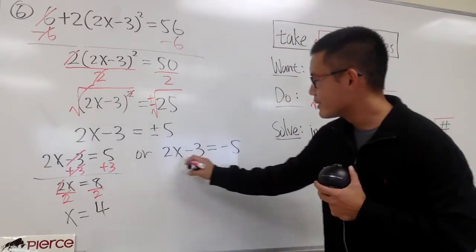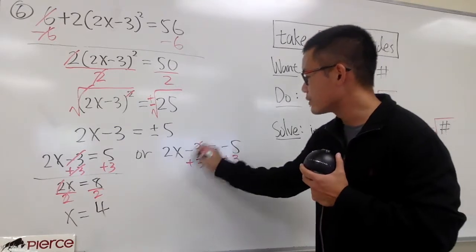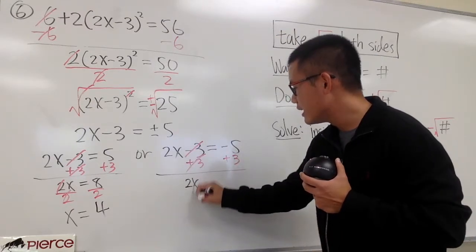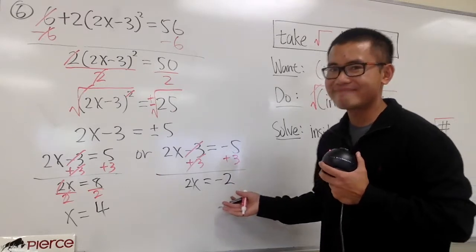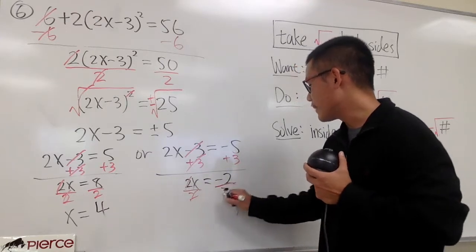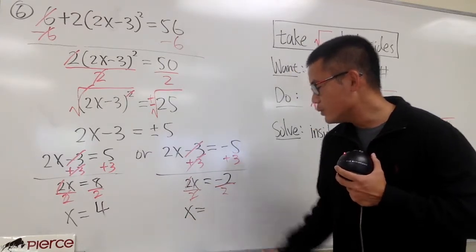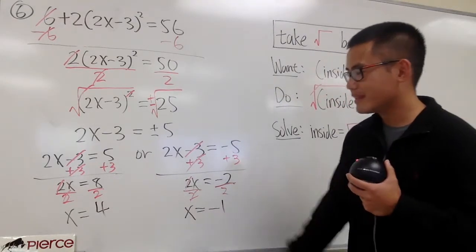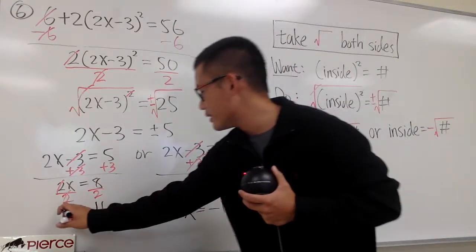For the second equation, 2x minus 3 is equal to negative 5. We add 3 on both sides — cancel, cancel — and then we have 2x equals negative 5 plus 3, that's negative 2. Since it's 2 times x, we divide by 2 on both sides so they cancel, and x equals negative 2 divided by positive 2, which is negative 1. So we have two answers: 4 and negative 1.